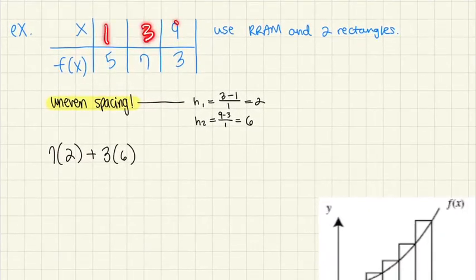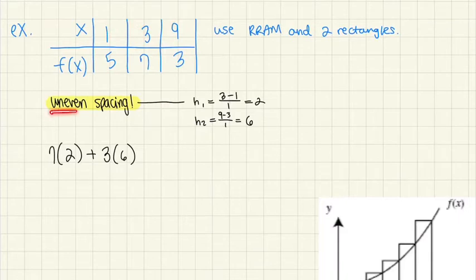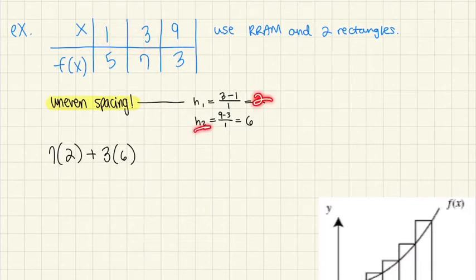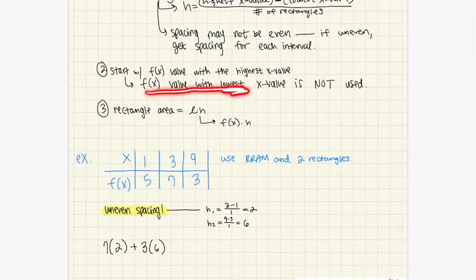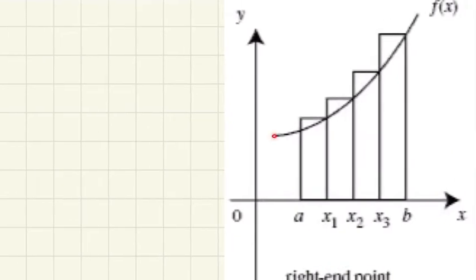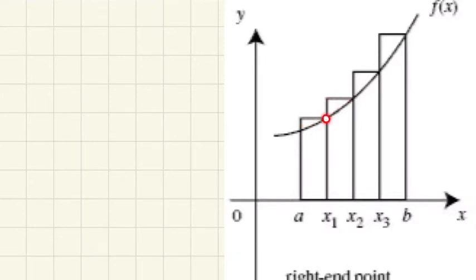Here's an example: the x values are 1, 3, and 9, which are not evenly spaced — the first interval is +2 and the second is +6. So you must calculate the spacing separately for each rectangle. The first spacing is 2 and the second is 6, and you multiply each by the corresponding f(x) length. You use 7 and 3 because you exclude the f(x) value at the lowest x value.